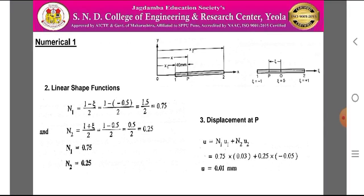For the calculation of linear shape functions, we know that for one-dimensional two-noded elements: N1 = (1 - ε)/2 and N2 = (1 + ε)/2. Substituting ε = -0.5: N1 = (1 - (-0.5))/2 = 1.5/2 = 0.75, and N2 = (1 + (-0.5))/2 = 0.5/2 = 0.25. Therefore, the linear shape functions are N1 = 0.75 and N2 = 0.25.